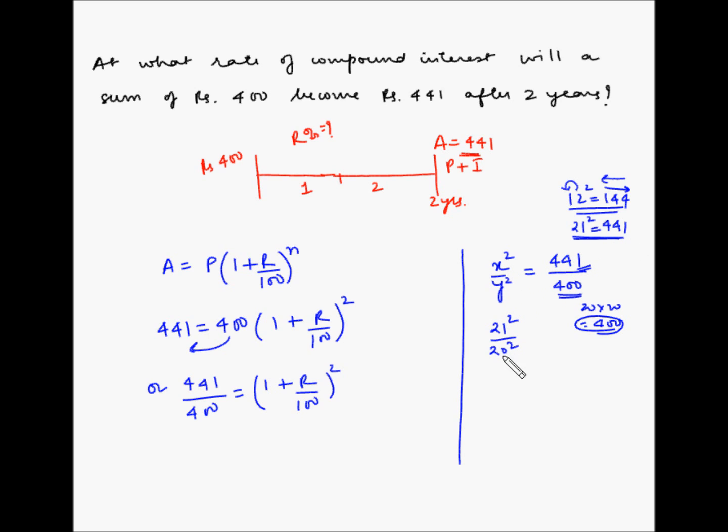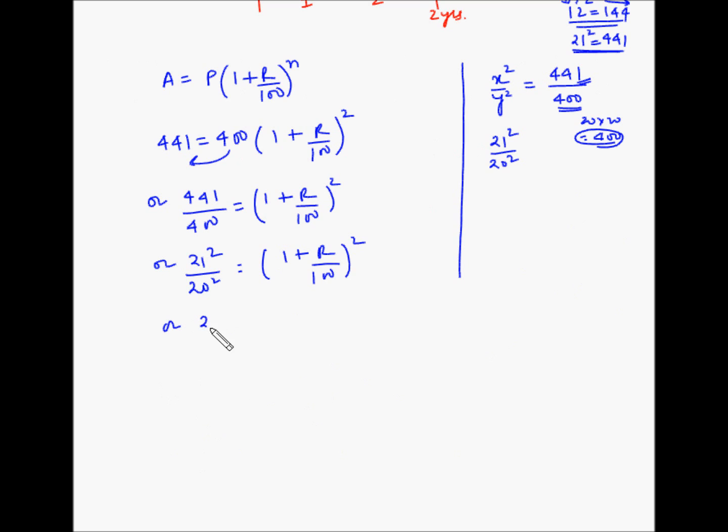So x will be 21 and y is 20. So 21 square by 20 square is equal to 1 plus R by 100 whole square. Or 21 by 20 whole square is equal to 1 plus R by 100 square. So what this means is that we can take square root on both sides of the equation. So we get 21 by 20 is equal to 1 plus R by 100.